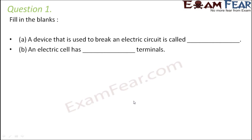Question number one — Fill in the blanks. A device that is used to break an electric circuit is called an electric switch, because it can both complete and break a circuit. An electric cell has two terminals — a positive terminal and a negative terminal.